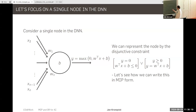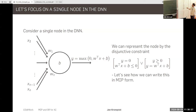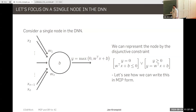Let's see how we can express a ReLU node as a mixed integer program. This may not be the typical derivation, but I find it the most intuitive. I think of the node as a disjunctive constraint: either the output y is zero and the affine function V^T x + b is less than or equal to zero, or the output y equals the affine function and y is positive. Either one of these sets of constraints needs to hold.